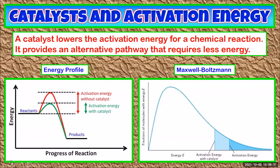The way a catalyst speeds up a chemical reaction is by lowering the activation energy. It provides a way for the reaction to occur with less energy — an alternative pathway is how we say this. You can show this on an energy profile diagram by showing the transition state at a lower energy level.